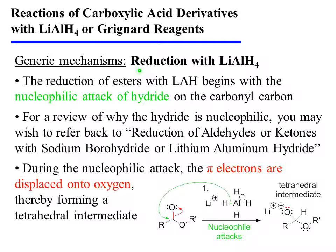Let's begin with the reduction of carboxylic acid derivatives using lithium aluminum hydride. The reduction of esters with lithium aluminum hydride begins with the nucleophilic attack of hydride on the carbonyl carbon. For a review of why hydride is nucleophilic, you may wish to refer back to the video on the reduction of aldehydes or ketones with sodium borohydride or lithium aluminum hydride. During this nucleophilic attack, the pi electrons are displaced onto oxygen, thereby forming a tetrahedral intermediate.